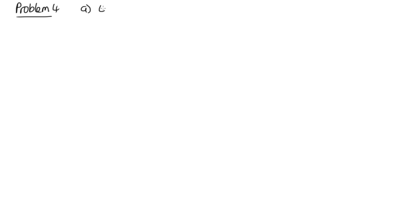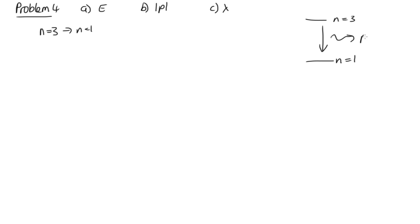Problem four. We're asked to calculate (a) the energy, (b) the magnitude of the momentum, and (c) the wavelength as an electron in hydrogen goes from n=3 to n=1. When the electron jumps down from n=3 to n=1, it releases a photon — this is an emitted photon.